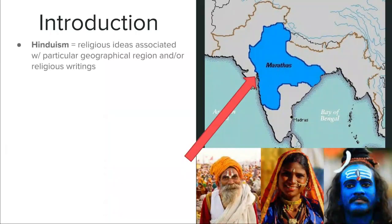To introduce Hinduism — much like indigenous traditions — the term doesn't necessarily tell us exactly what someone believes if they're a practitioner. It is instead a very large umbrella term capturing a set of religious ideas associated with a particular geographical region, the Indus River in central-western India, or a particular set of religious writings. You could associate yourself with Hinduism as being part of a tradition that began in this part of the world, or because you follow teachings from a specific set of texts.